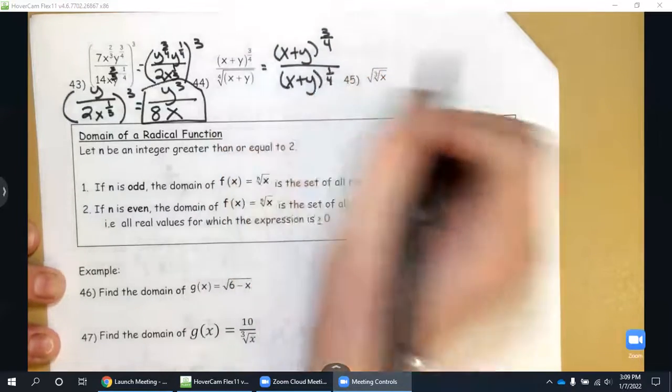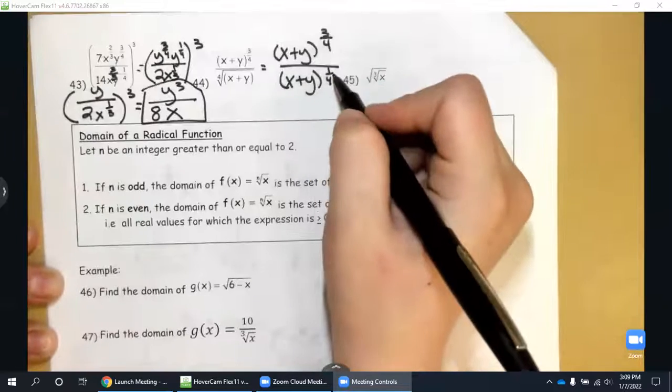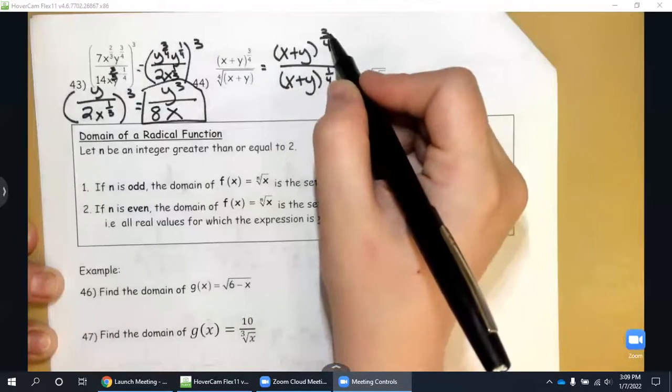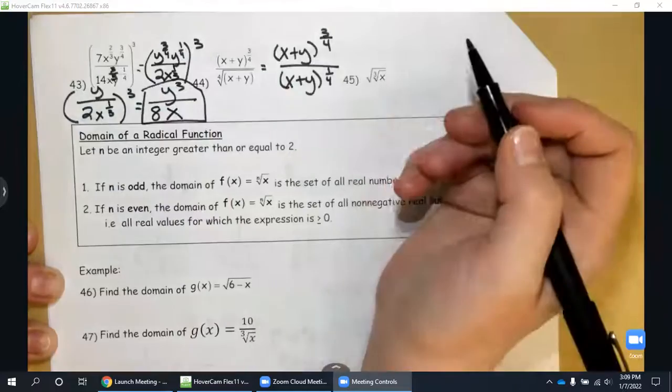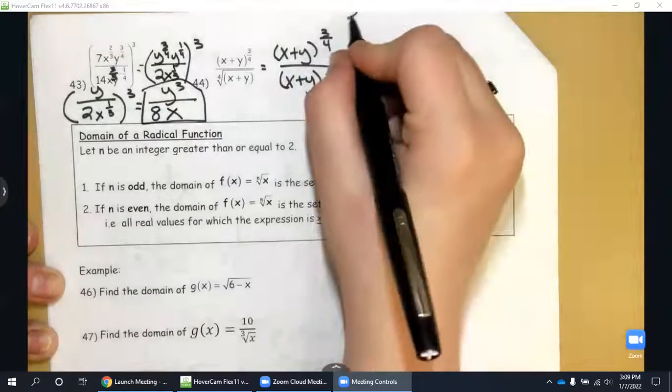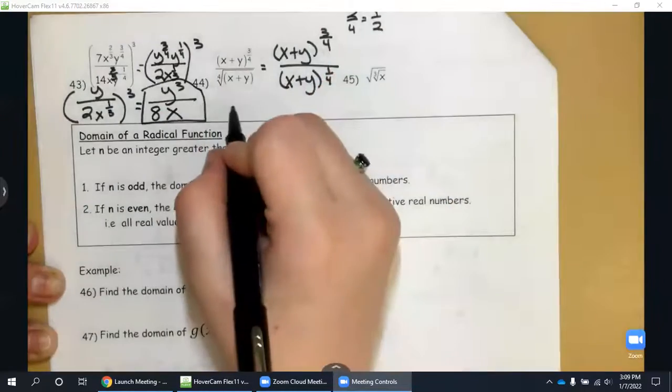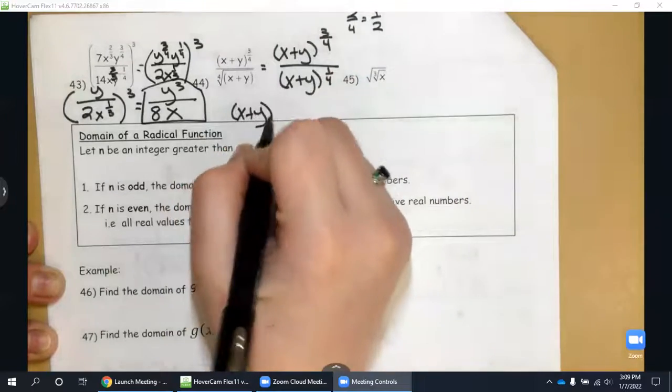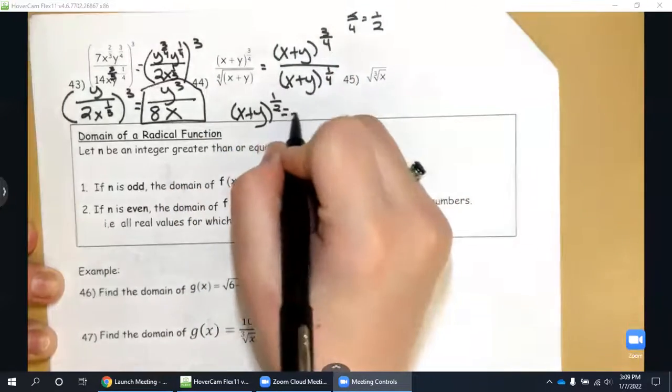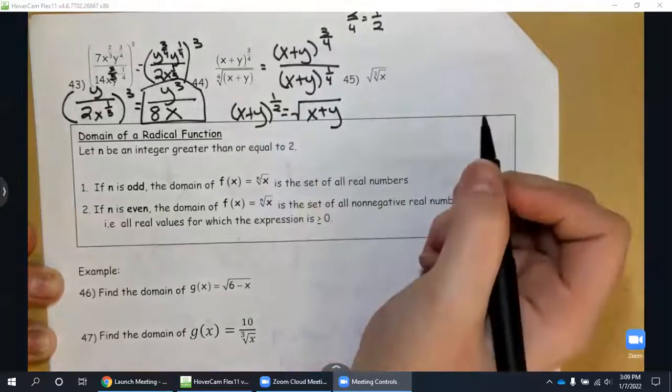So these are like terms and I can subtract their exponents. So three over four minus one over four, that's two over four, which is also one-half. So that's the square root, so x plus y to the one-half, which is also the square root of x plus y. Both of those would be correct.